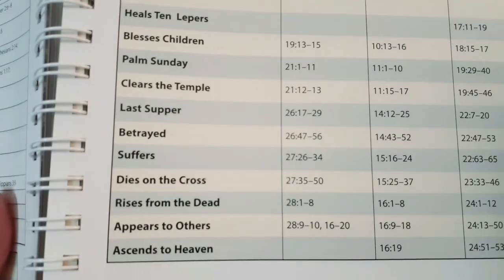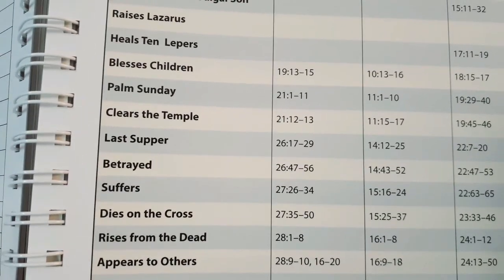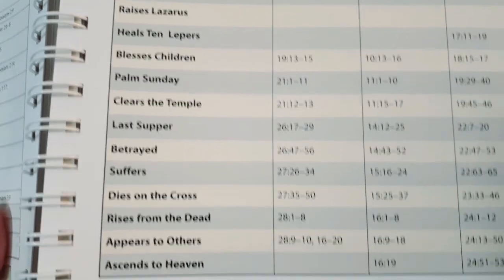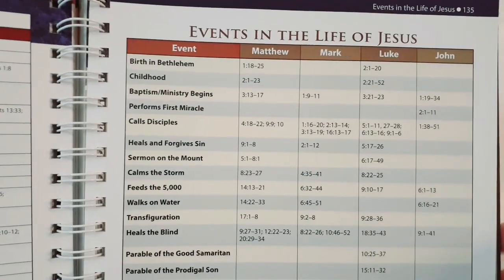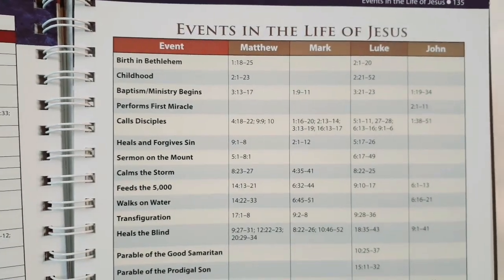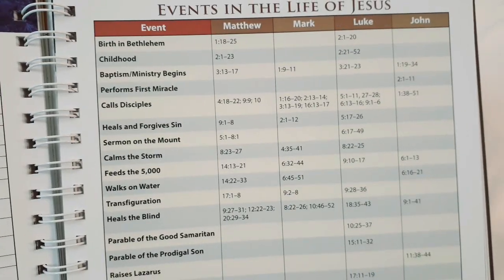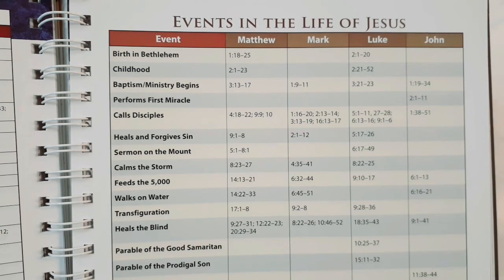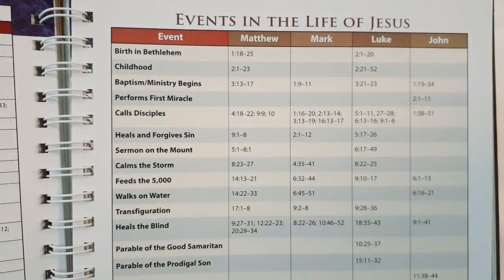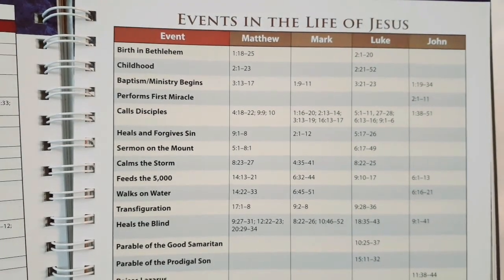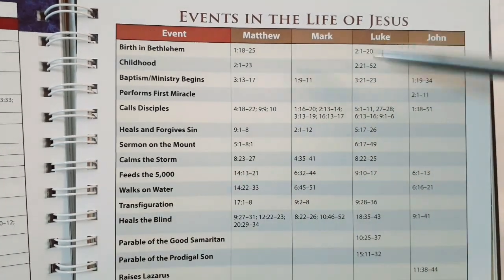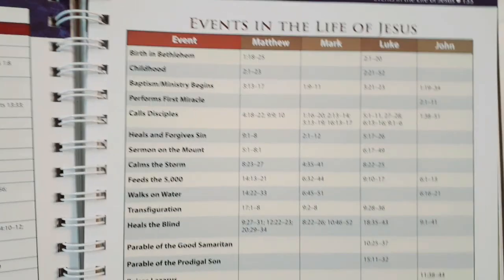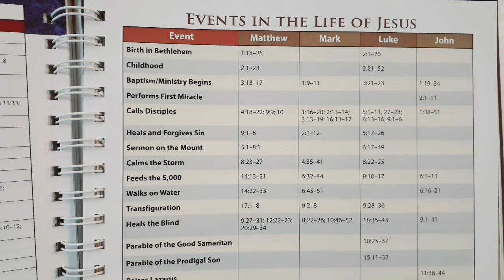It goes on to the Last Supper — what we call Communion or the time of Passover — betrayed, suffers, dies on the cross, rises from the dead, appears to others, and ascends to heaven. There will be some questions about why some events are not recorded in all four gospels. For example, the birth is mentioned a lot in Matthew and Luke, while Mark and John go straight into the ministry. The miracle at Cana is not in Matthew, Mark, or Luke, but John talks a lot about it. You can ask your pastor or a church leader for answers.